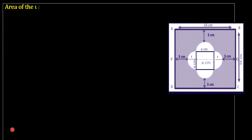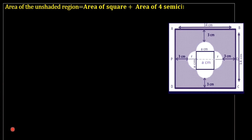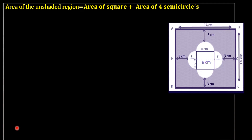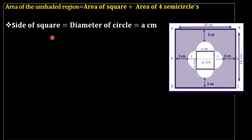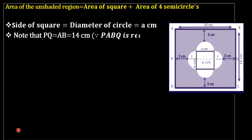Area of the unshaded region equals area of the square plus area of the four semicircles. The side of the square and the diameter of the circle are both equal to 'a' centimetres — this line is the diameter of the circle and the side of the square. PQ and AB form a rectangle, so this line is also equal to 'a' centimetres.